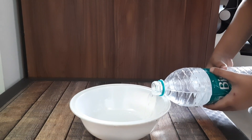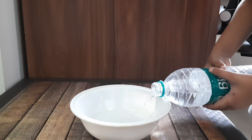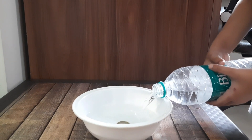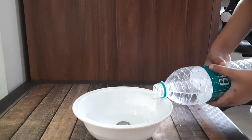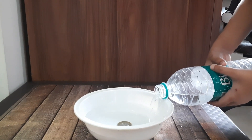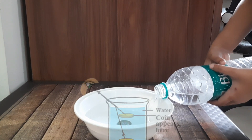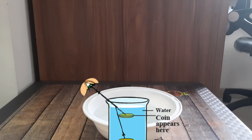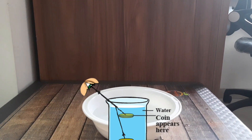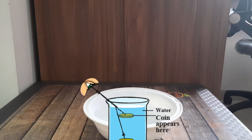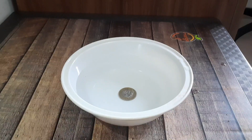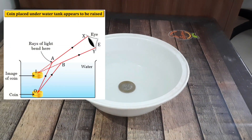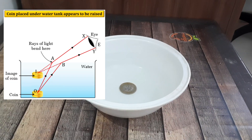You may wonder how we are able to see the coin after adding the water. This is related to refraction of light. What you are seeing is not the exact coin — it is the image of the coin formed because of refraction of light. So what we see is not the exact position, or true position, of the coin.